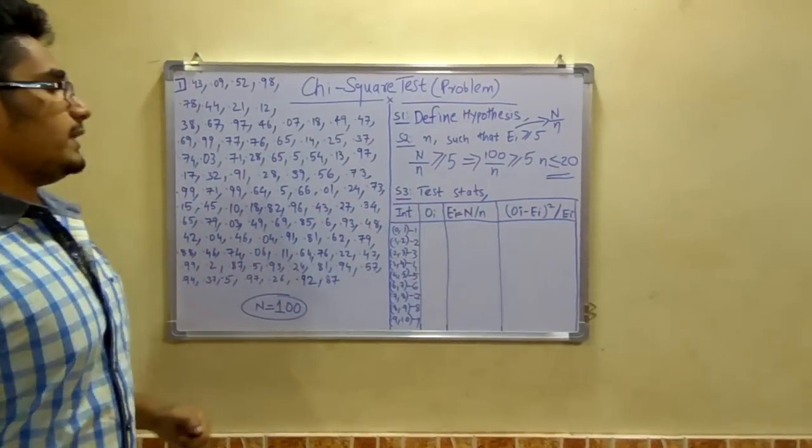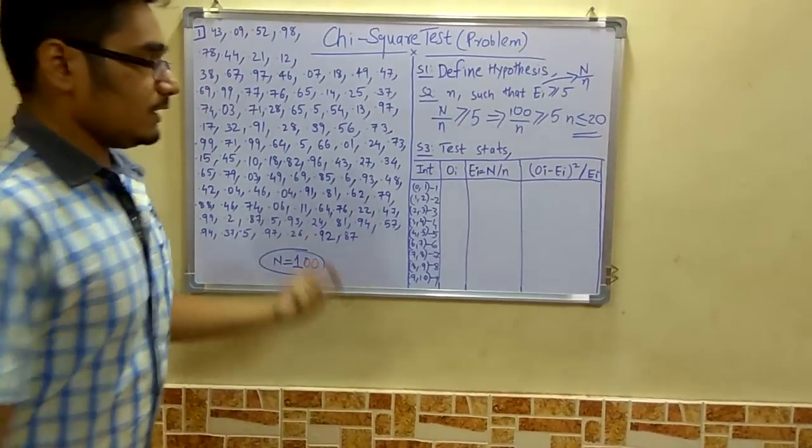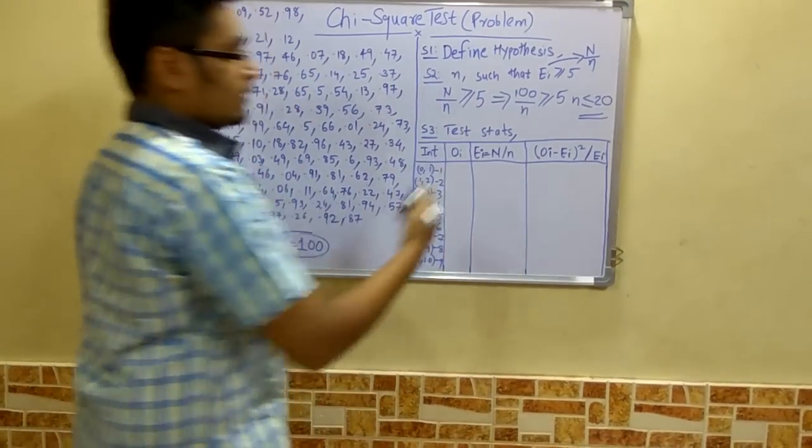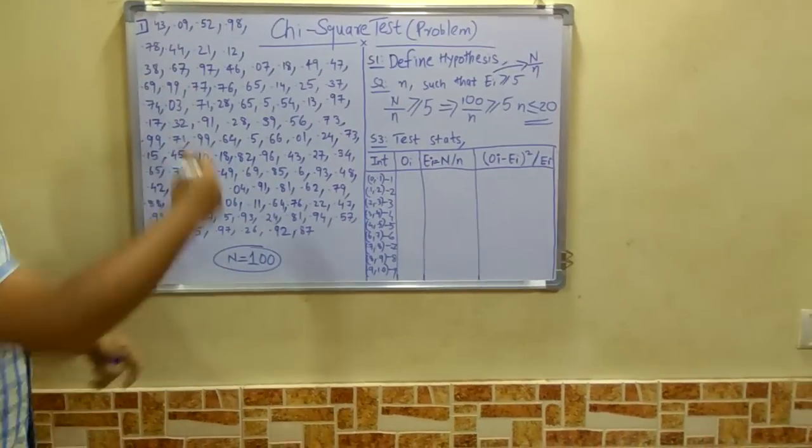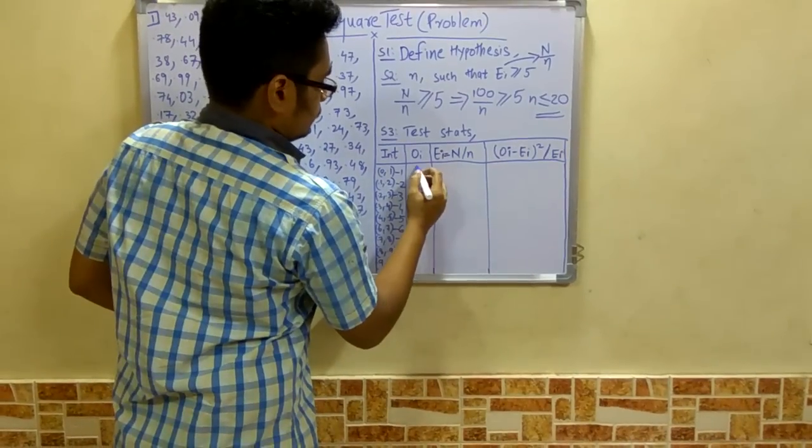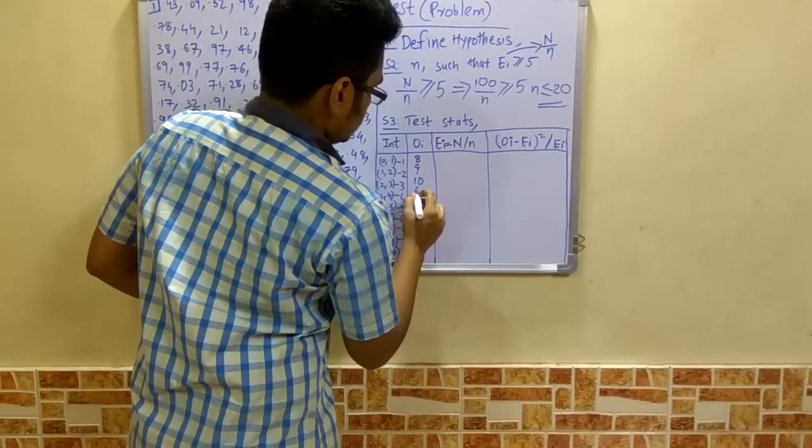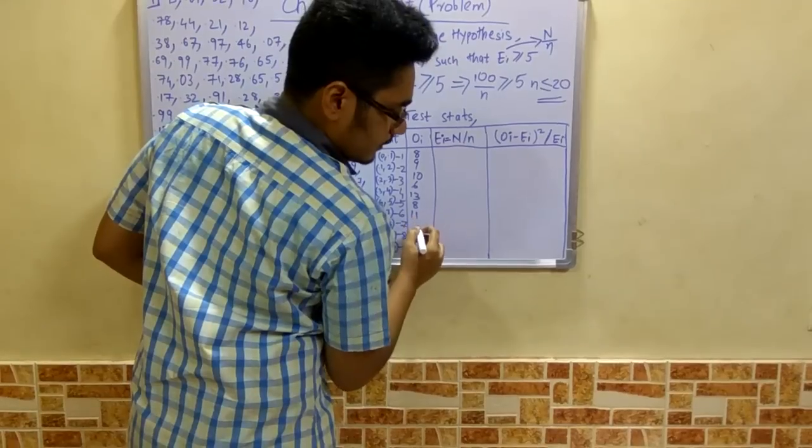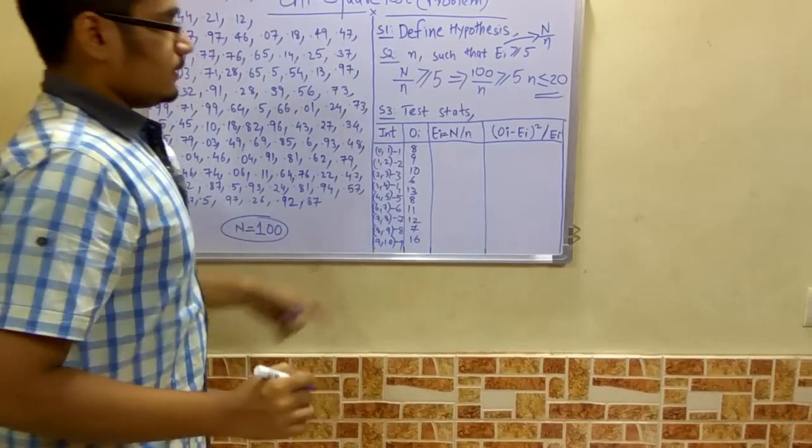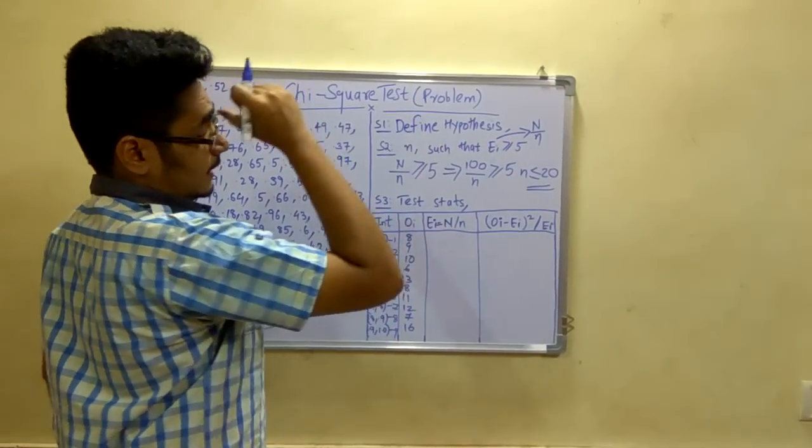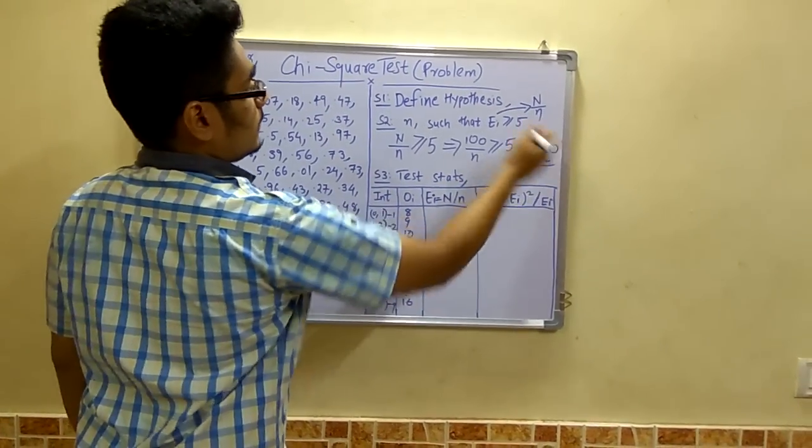Now after you do this, you have to calculate the oi, that is the observed frequency. Observed frequency you can calculate how much frequency of each numbers are there. So I have already done it, I will just write here for understanding purpose. But when you actually solve it you will have to compute it and solve. So for first it is eight, second it is nine, then it is ten, then again six, thirteen, eight, eleven, twelve, seven, and sixteen.